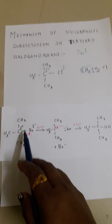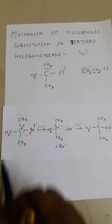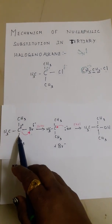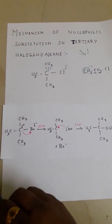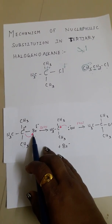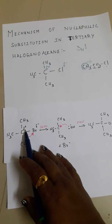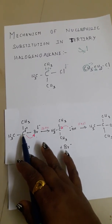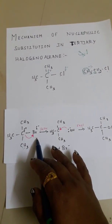For example, take tertiary bromobutane. The carbon is a carbocation which donates electrons to bromine.